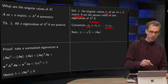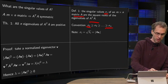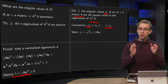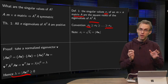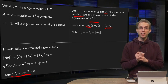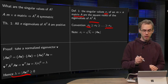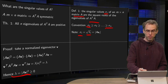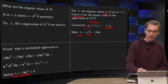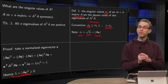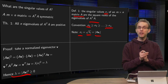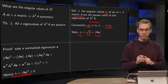Notice that we showed lambda equals the norm of AV squared. Taking square roots on both sides, sigma_i — the square root of lambda_i — equals the norm of A times V_i. This is a useful equality which we will use later on.